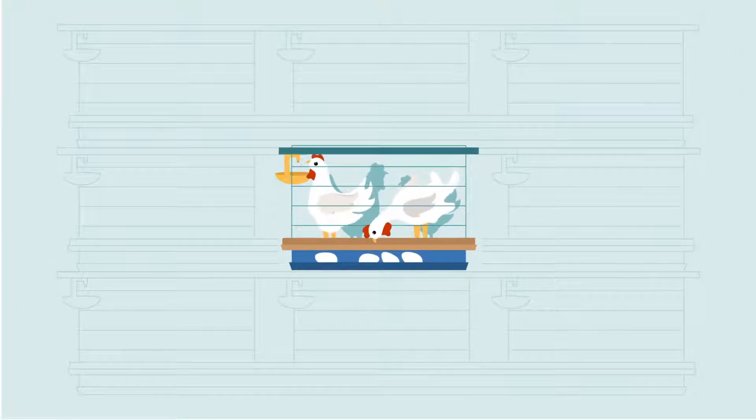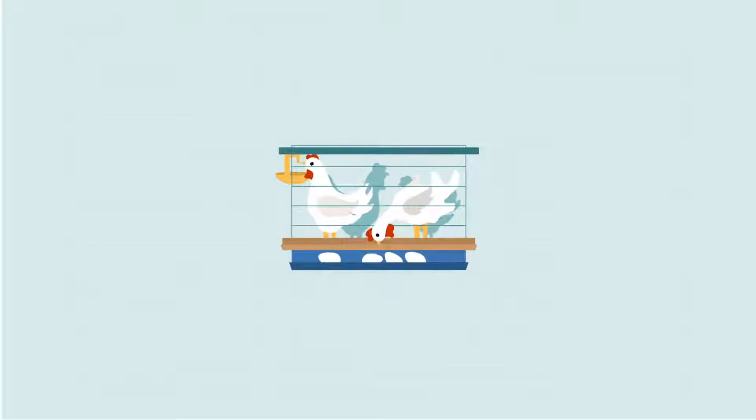In traditional housing, hens are kept in multi-tiered cages, usually with several other hens in each cage.